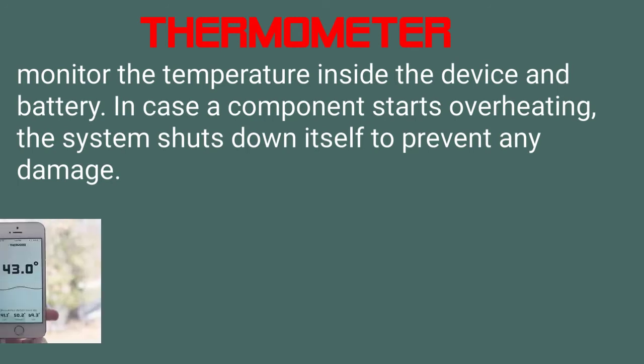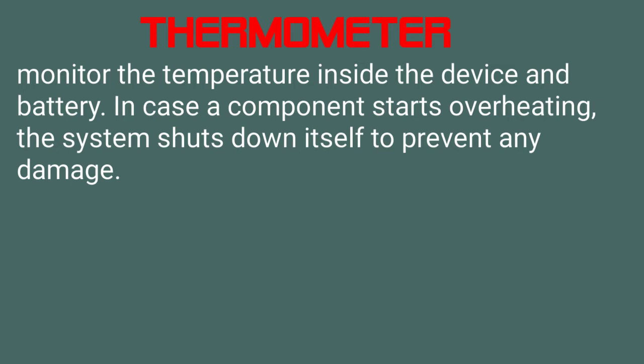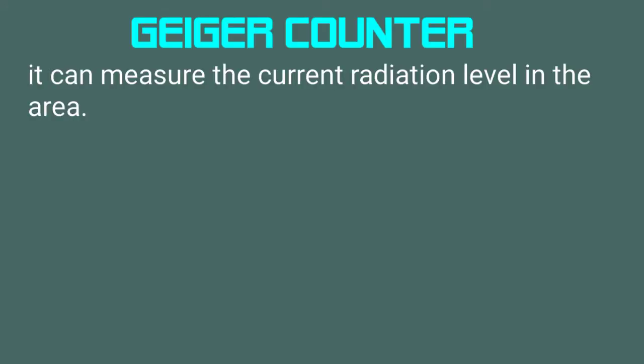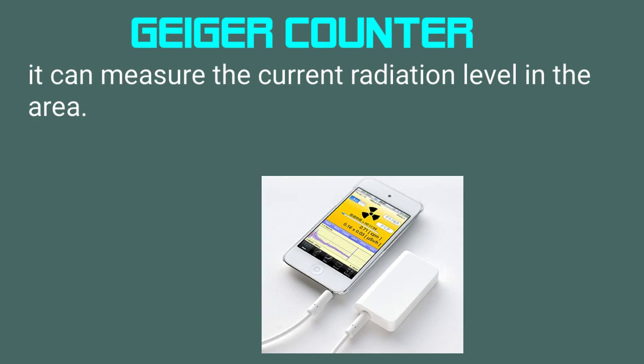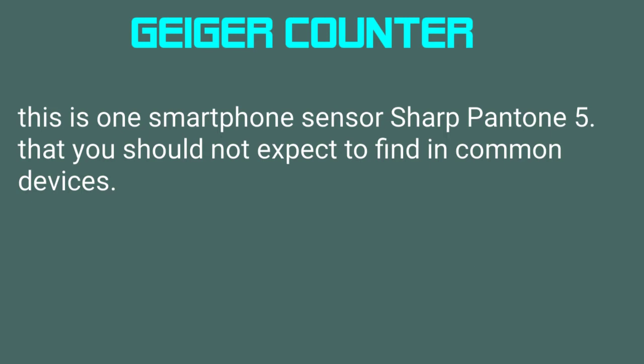Thermometer — every smartphone comes with an in-built thermometer for monitoring the temperature inside the device and battery. In case a component starts overheating, the system shuts down itself to prevent any damage. However, some handsets come with additional thermometers to measure ambient temperature. Geiger Counter — it can measure the current radiation level in an area, but this is one smartphone sensor you should not expect to find in common devices.